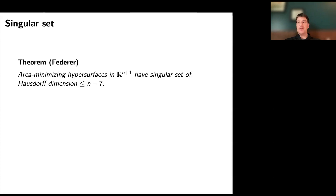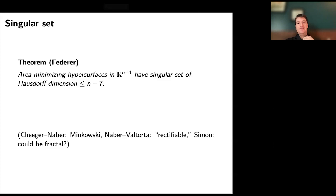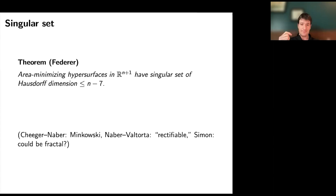Alessio talked about the structure of the singular set in the obstacle problem; similarly that's a problem receiving a lot of attention on the minimal surface side, though our understanding here is quite a bit worse. Cheeger-Naber improved the Hausdorff dimension estimate to a Minkowski dimension estimate. Naber and Valtorta — and Leon Simon — showed the singular set is rectifiable, meaning up to a set of lower dimension it's C¹. Recent examples of Leon Simon suggest the singular set could be fractal, though those examples are not known to be area-minimizing.